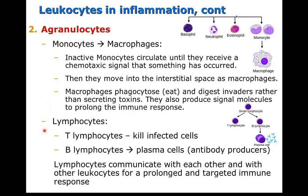Within the second type of agranulocytes we have lymphocytes, and our lymphocyte arsenal includes T cells and B cells. T lymphocytes actually kill infected cells, while B lymphocytes produce antibodies. The lymphocytes communicate with each other to produce a longer, targeted immune response.